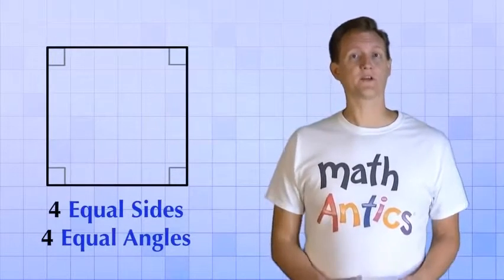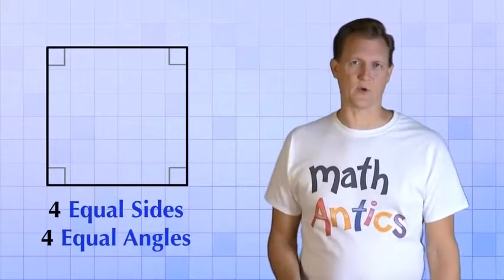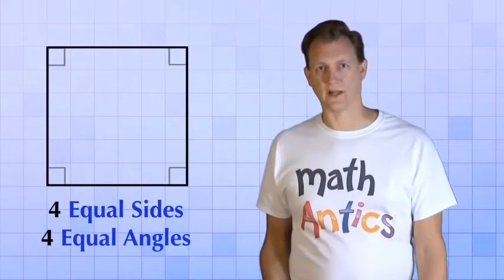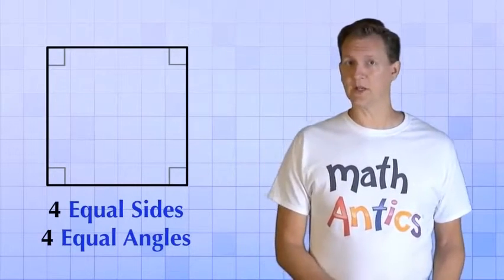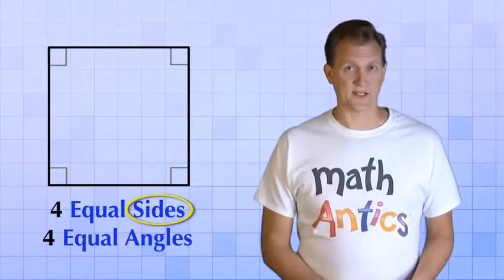Okay, so squares are an important type of quadrilateral. But we're going to make some changes to this square to see what other types of quadrilaterals there are. The two things that we can change are the sides and the angles. Let's start by changing the sides.